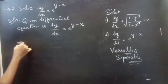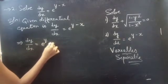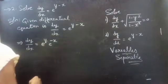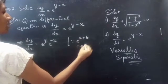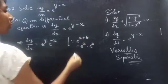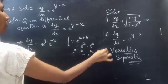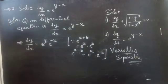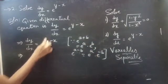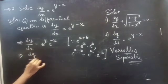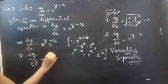You could write it as dy/dx equals e to the power y into e to the power minus x, since e to the power (a minus b) can be written as e to the power a into e to the power minus b. Now you can take e to the power y to the denominator of the LHS and take dx to the right hand side.